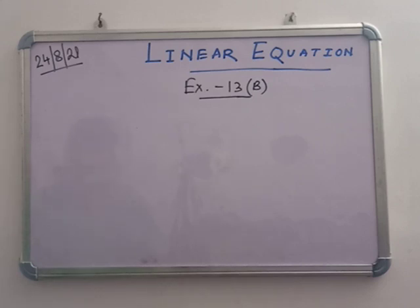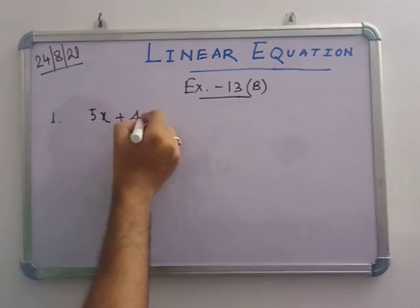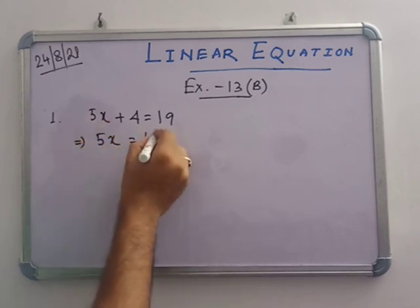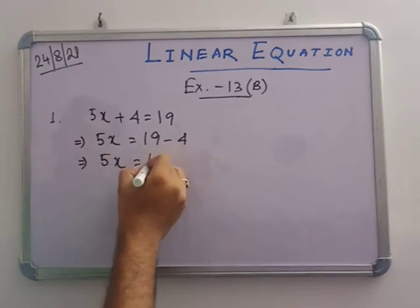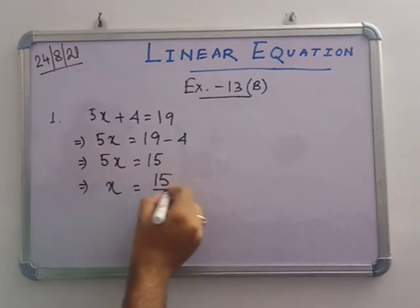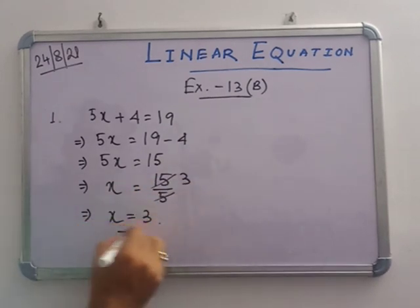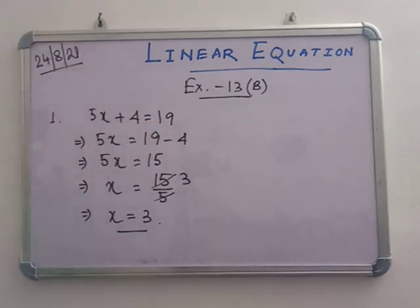Now we are going to start with number 1. In number 1, we see that 5x + 4 = 19. So that means 5x = 19 - 4 = 15, and x = 15/5 = 3. So x equals 3. Now put the value: 5 × 3 = 15, 15 + 4 = 19. That is verified.